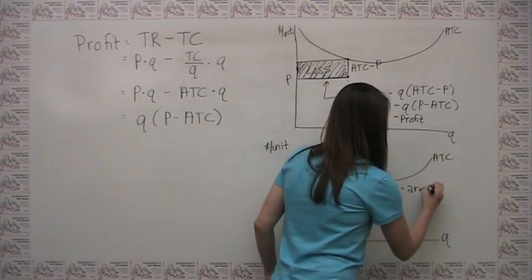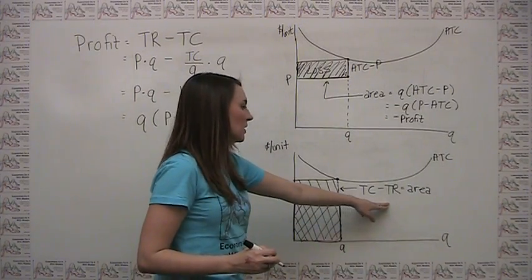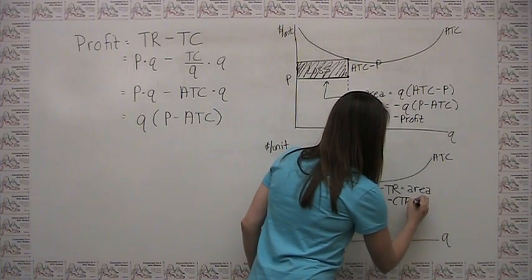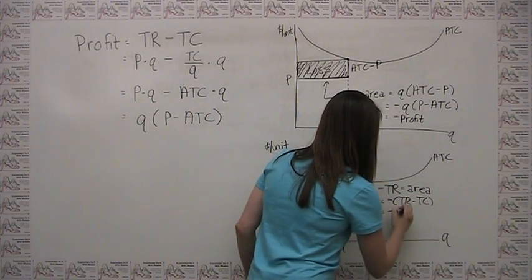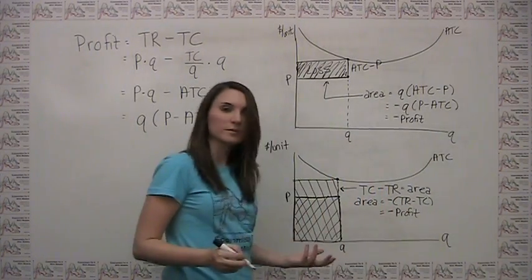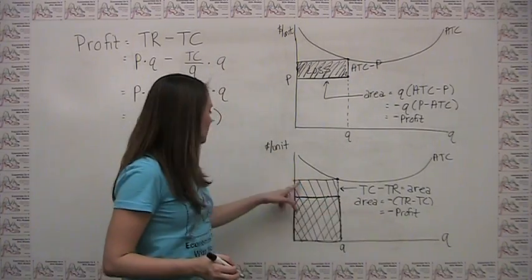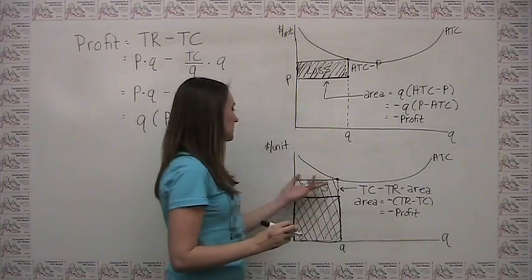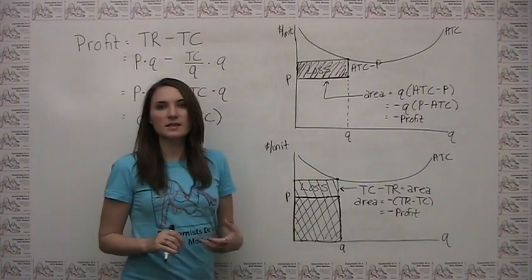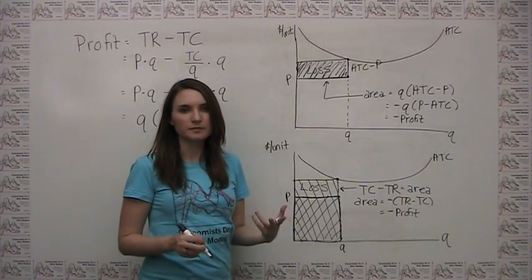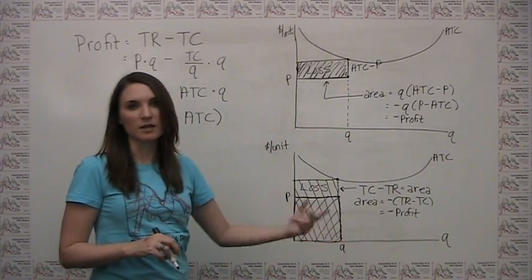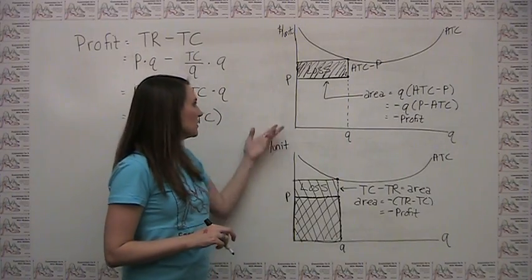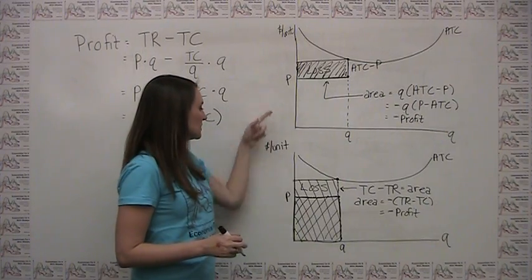The area of this remaining rectangle equals the negative of (total revenue minus total cost), which is the negative of profit. Since losses are just negative profits, the area of this rectangle represents the amount of losses the firm is making. When a firm is making positive profits, we talk about profit maximization. When it's not possible to make positive profits, we think about loss minimization — and these diagrams become relevant.